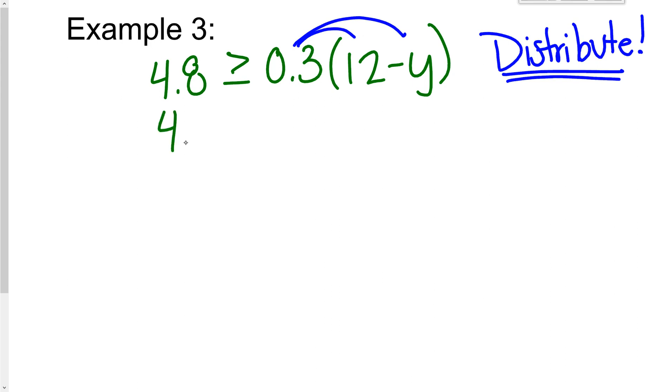So I do need to make sure I distribute, and I distribute to both things inside. So this is still 4.8. This is still greater than or equal to. But now I'm going to do 0.3 times 12, which gives me 3.6.